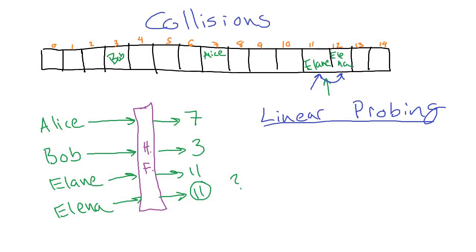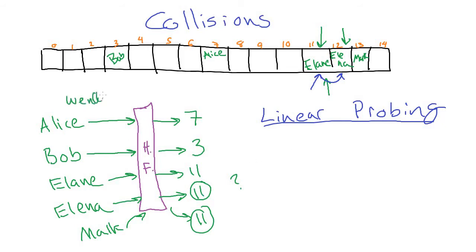If we then insert someone else and get yet another collision — say we put Mark through the hash function and it also gives us index 11 — we'd go to 11, see it's filled, go to the next location, see that's filled, and finally put Mark into slot 13. Similar to the queue, we may have a wrap-around. So in linear probing you basically insert in the next available slot after the intended one, wrapping around if needed.